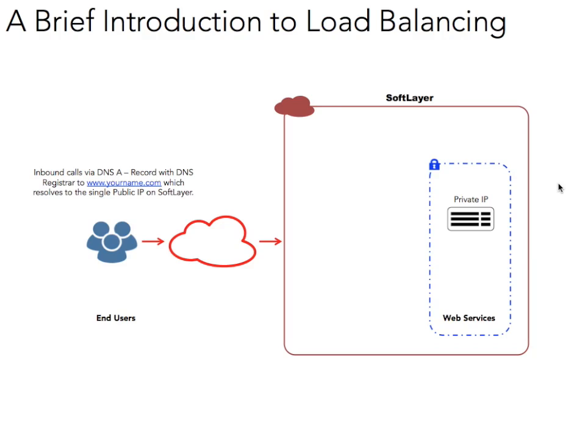For your web servers, you'll want some sort of high availability. Why would you have only one web server? Because if your web server goes down, you need to have a backup just in case. I've shown an example of two here, but this could be three, four, hundreds, even thousands of web servers if you're a very popular site. So you have your web service — maybe it's an eShop, maybe it's an application you're distributing to customers, maybe it's an accounting application. Whether you're a bookshop or an accounting application, you would want that service to be highly available.